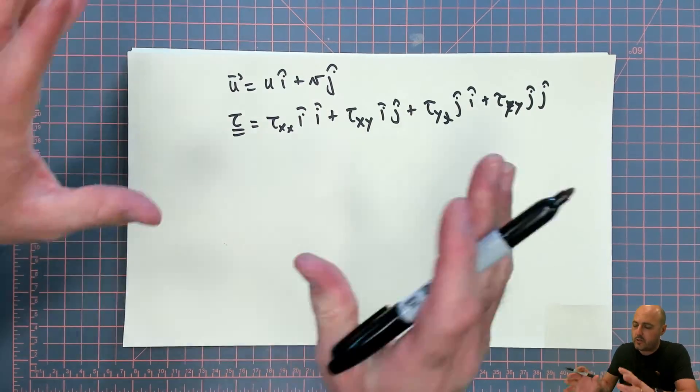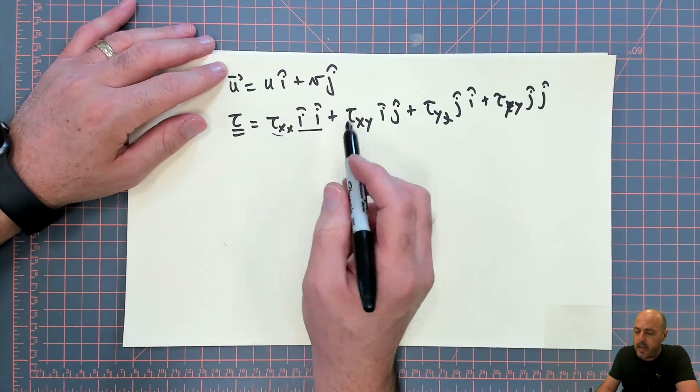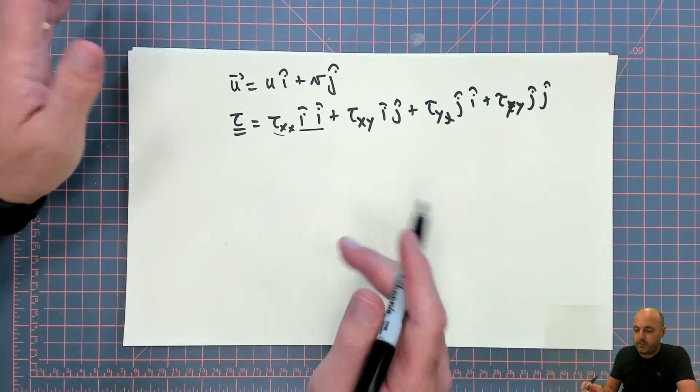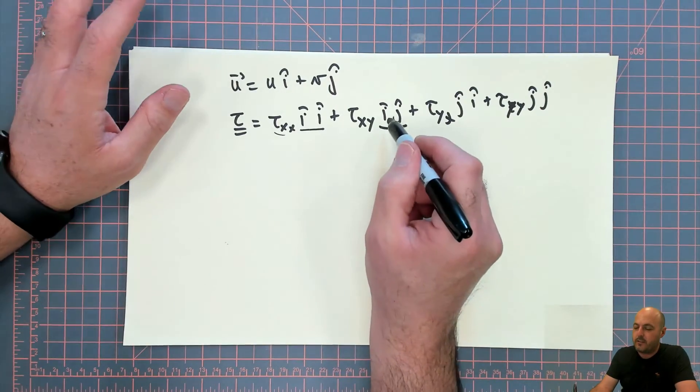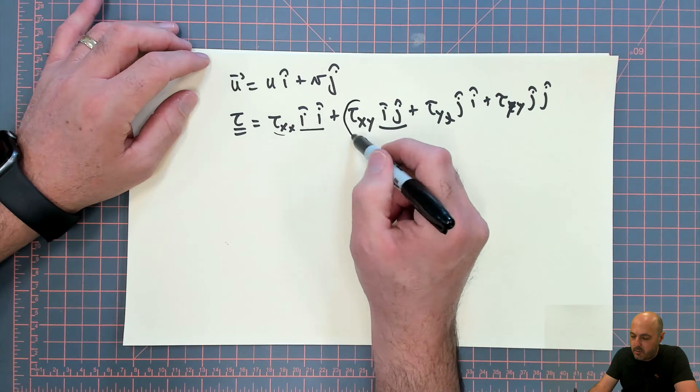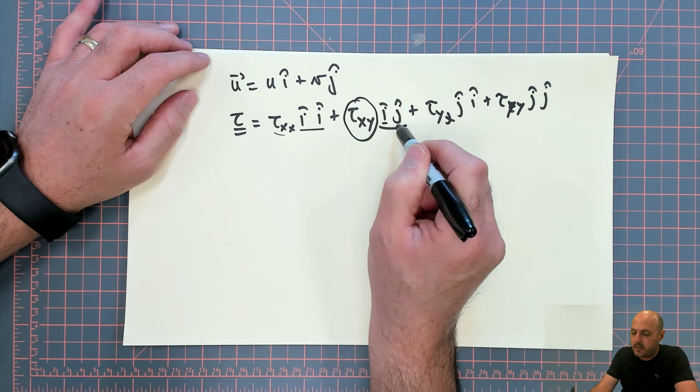Notice that this is just simply a notation. This doesn't mean that tau_xx acts in an i-i direction or i-j direction, like a 45 degree angle. No, it's not. This is simply saying that this number here, this component here, is simply acting on an i-face in the j direction.